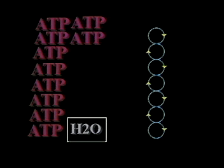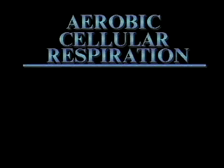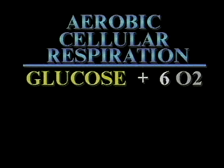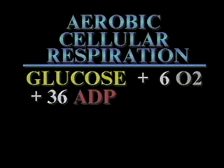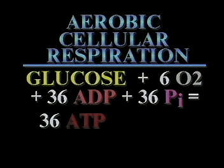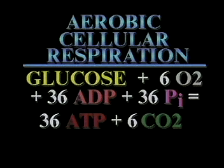The net result of all the complex reactions that comprise aerobic cellular respiration can be summed up as follows: a single molecule of glucose, when combined with six molecules of oxygen, will release enough energy to cause a total of 36 ADP molecules to be joined to 36 inorganic phosphate molecules, resulting in the production of 36 new ATP molecules, plus six molecules of carbon dioxide and six molecules of water.